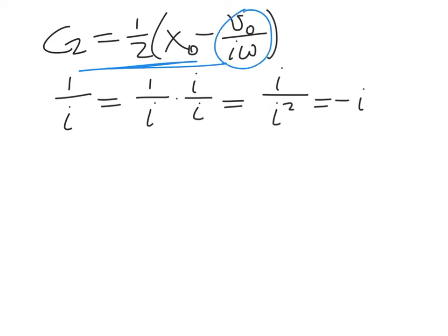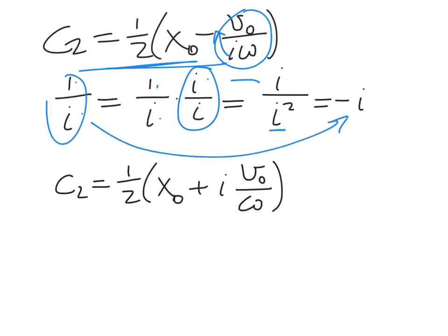Now we rationalize the second term—essentially putting i on top. One over i equals i over i², and since i² equals minus 1, we find that 1/i equals negative i. So our solution for c2 becomes: c2 = (1/2)(x₀ + i·v₀/ω). We take this and plug back in for c1. Remember we had c1 = x₀ minus c2, so plugging in our solution for c2 gives us c1.